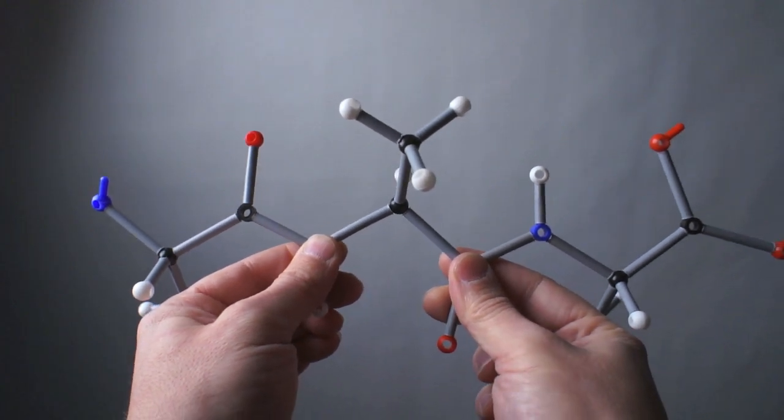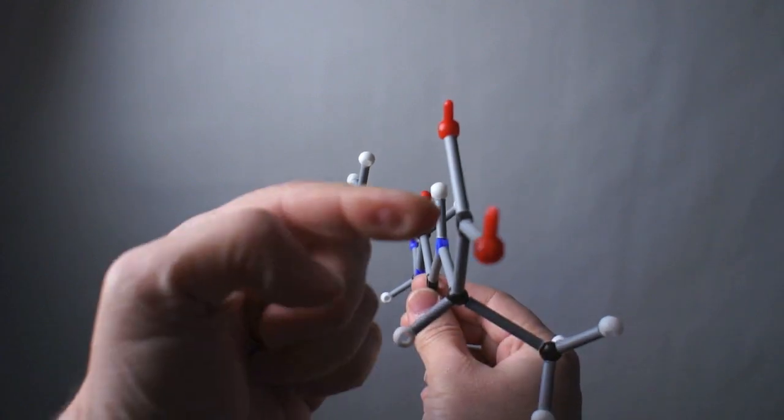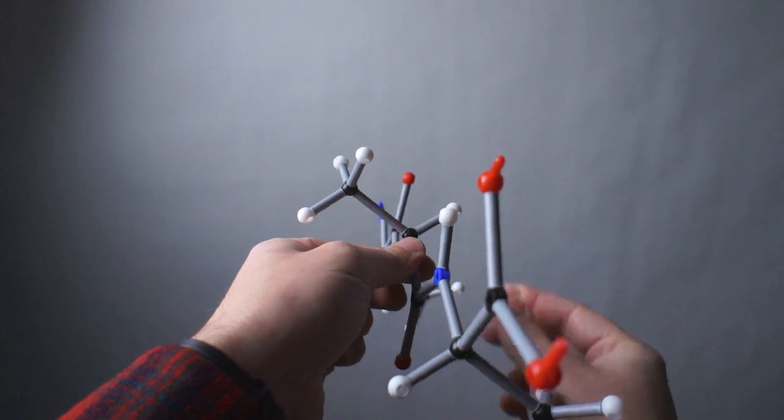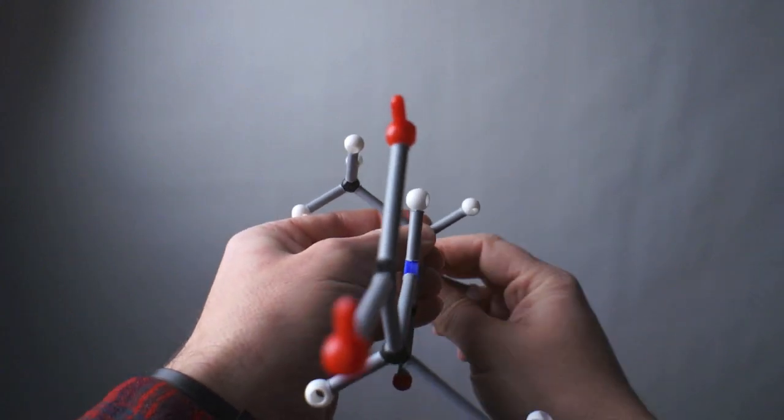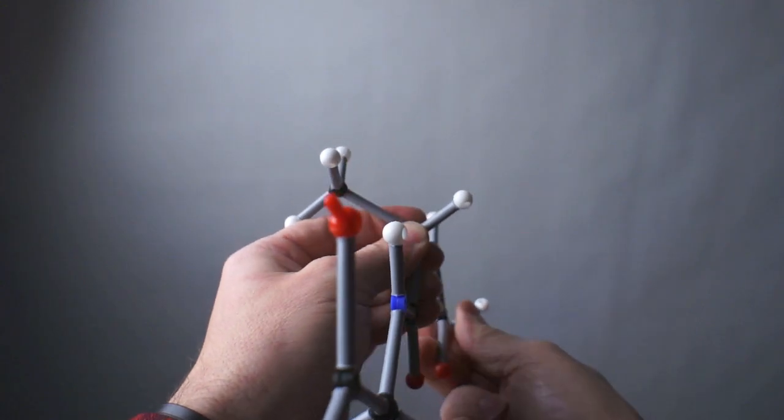So to do that rotation, the first thing we do is turn the model with the C-terminal facing us and find phi, which is right here, and then we're going to twist phi by 180 degrees. So now phi is zero degrees.